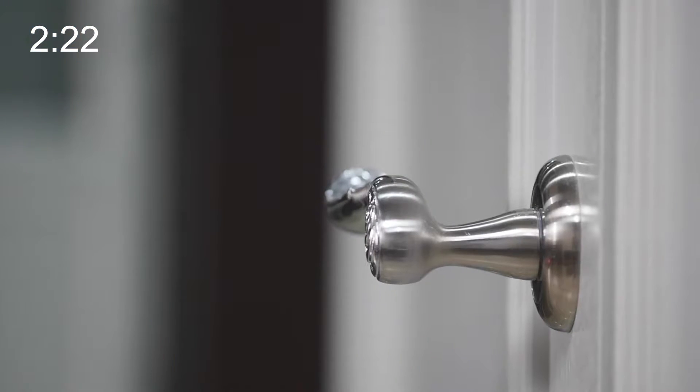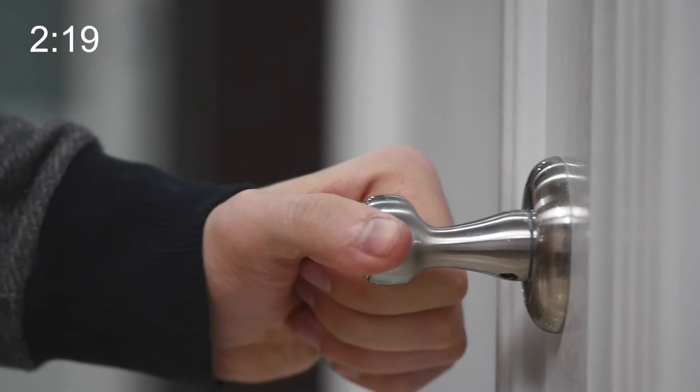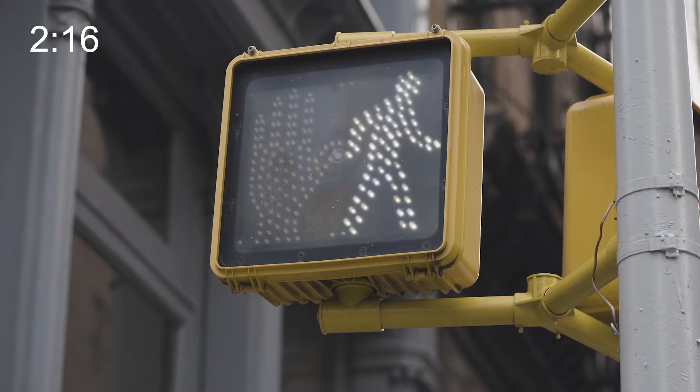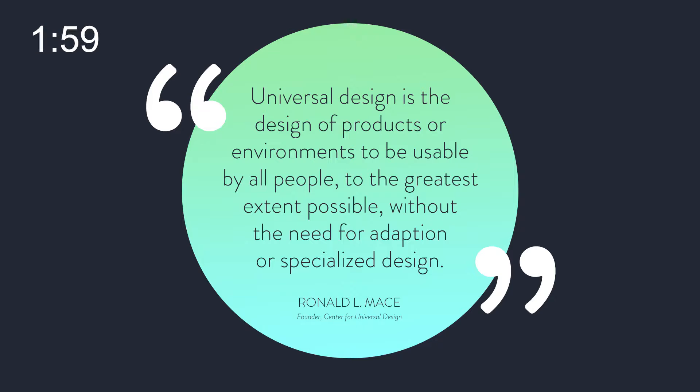We have already made big changes in the physical spaces around us to make it easier for people with disabilities to use. Think no more spherical doorknobs, or how pedestrian traffic crossings make beeping noises. Why should the web be any different? For the sake of this book, we are going to briefly touch on two ways to design for accessibility: accessible design and universal design. While accessible design considers the needs of people with disabilities, universal design considers the thoughts of the human population — it's the design of products or environments to be usable by all people to the greatest extent possible without the need for adaptation or specialized design. This book takes the universal design approach whenever possible.